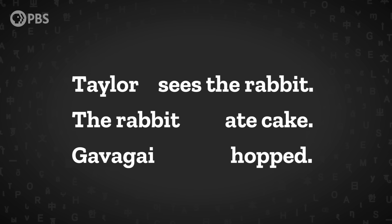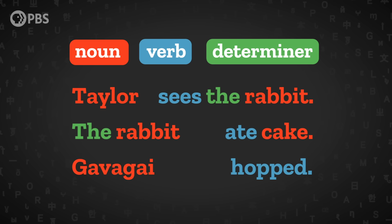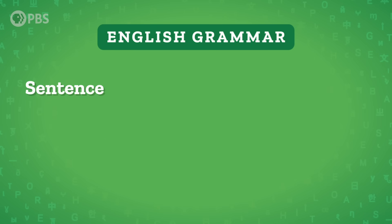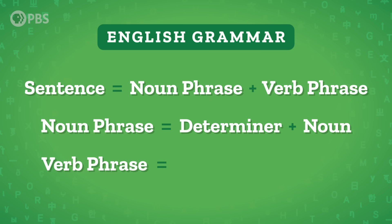Let's go back to our list that works and highlight the nouns, verbs, and determiners in different colors. For 'Taylor sees the rabbit,' we'll make 'Taylor' and 'the rabbit' red for noun, 'sees' blue for verb, and 'the' green for determiner. Based on this, we could write a couple of rules for English grammar. First, a sentence in English is made up of two parts: a noun phrase plus a verb phrase. A noun phrase is made up of a determiner plus a noun. And a verb phrase is made up of a verb plus a noun phrase.